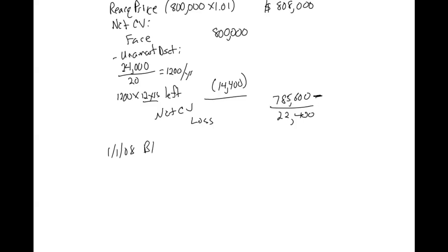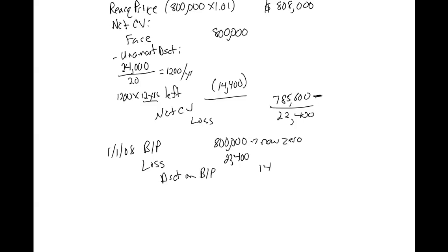We are on January 1, 2008, retiring these bonds. Bonds payable comes off the books — debit $800,000 so that account goes to zero. We have a loss; losses are debits. This will probably say 'loss on early extinguishment of debt' or 'loss on retirement of debt' — $22,400. Don't forget to take the discount off the books; discounts have a debit balance, so we credit to close it out — $14,400, bringing that account to zero. And then we credit cash for the reacquisition price of $808,000 to retire the bonds.